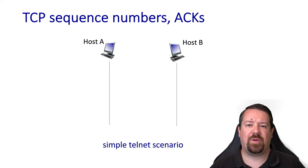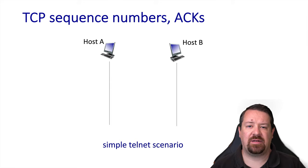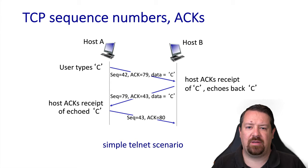Here's an example to demonstrate counting with byte stream sequence numbers. Host A and Host B have established a Telnet session, which means they're going to be sending one character at a time and echoing that character back. Host A sends the letter C, which is one byte of data. Host B both acknowledges it and sends the letter back, because this is how the Telnet protocol works. The original packet had sequence number 42 and it's one byte of data, so the next sequence number expected is 43. We see that 43 is in the ACK for the letter C. We also see that in the first packet, the ACK number 79 was included, which means Host A is expecting byte 79 as the next byte of data from Host B.